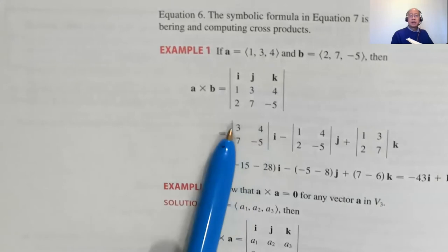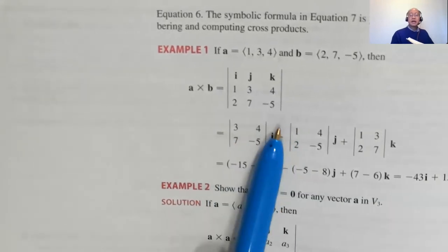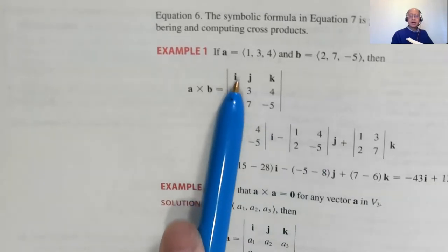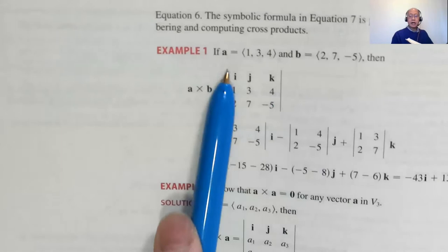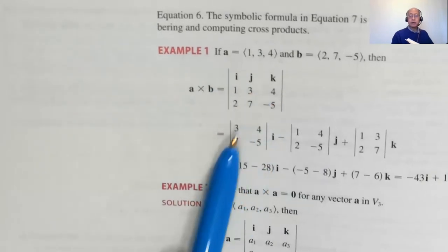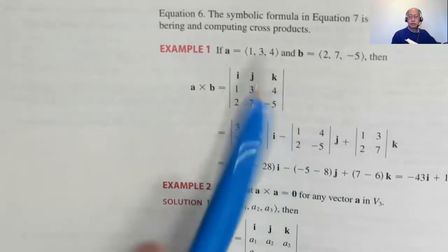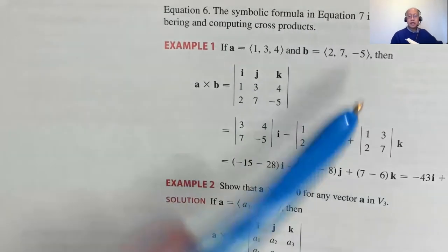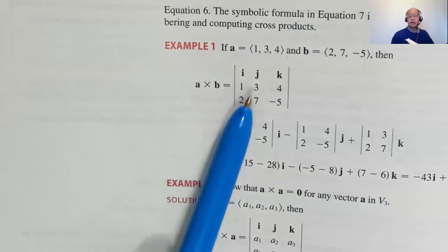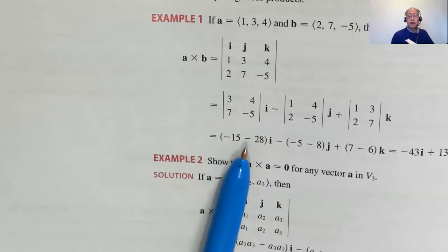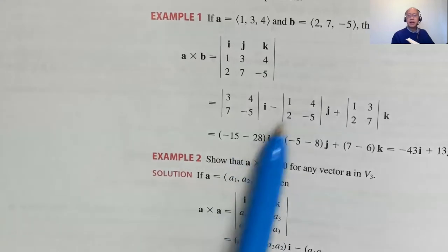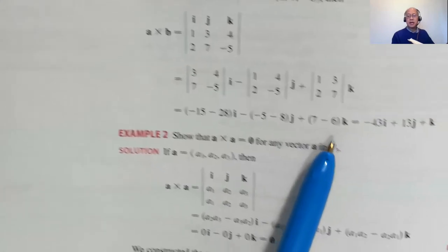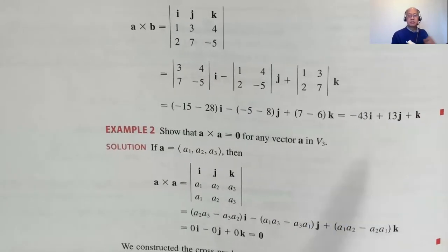It's going to be something·i minus something·j plus something·k — always the pattern: keep i, negate j, then k. Blocking out i's row and column gives [3,4; 7,-5]. Blocking out j's gives [1,4; 2,-5]. Blocking out k's gives [1,3; 2,7]. That gives (-15-28)i - (-5-8)j + (7-6)k = -43i + 13j + k.